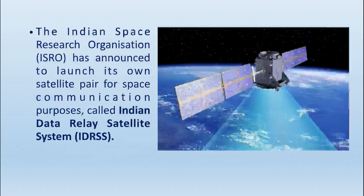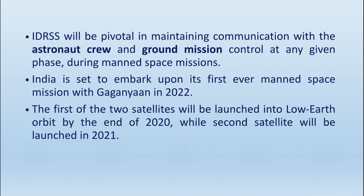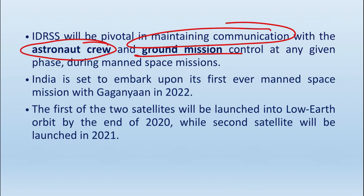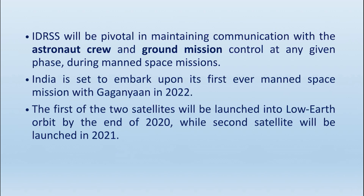Apart from all this, the Indian Space Research Organization has decided to have a fully dedicated group of satellites to maintain contact — called the Indian Data Relay Satellite System, or IDRSS. These satellites will provide communication between the astronaut crew and the ground mission control. The first satellite of this group was to be launched into low Earth orbit by the end of 2020, and the second satellite in 2021, to support the Gaganyaan mission in 2022.